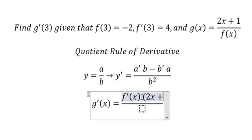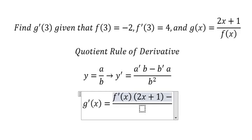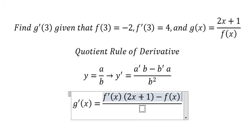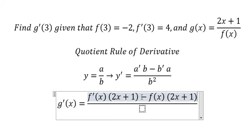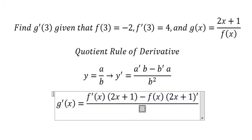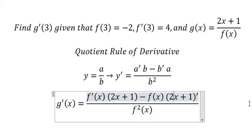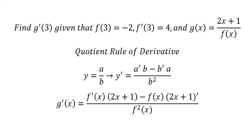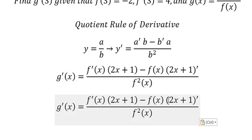...multiplied by 2x plus 1, minus f of x multiplied by the derivative of 2x plus 1, and we have the power 2 for f of x. So this one we have number 2.